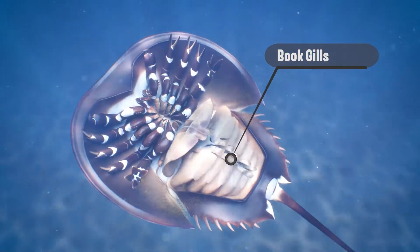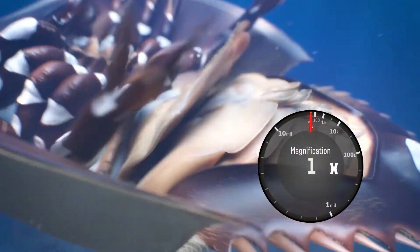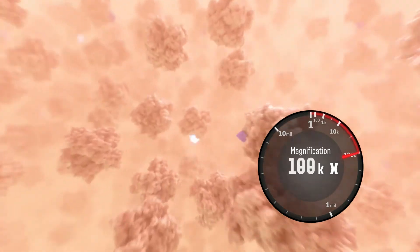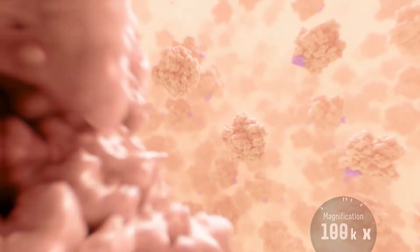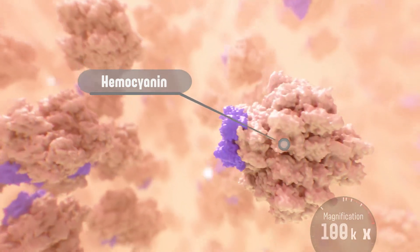It uses bookgills to take up oxygen from the environment. This animal's blood is called haemolymph and contains haemocyanin as an oxygen carrier.